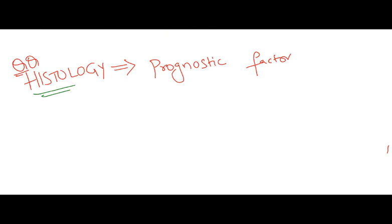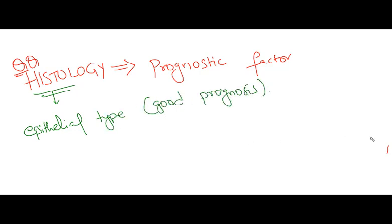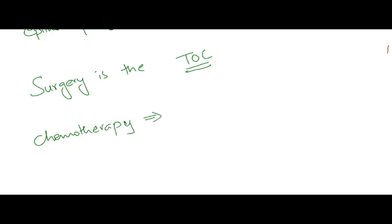As it is a carcinoma, surgery is the choice of therapy. Epithelial type of Wilms tumor has good prognosis. Surgery is the treatment of choice, and in advanced cases, chemotherapy and radiotherapy should be given. The chemotherapeutic agents of choice are actinomycin (dactinomycin), doxorubicin, and vincristine.